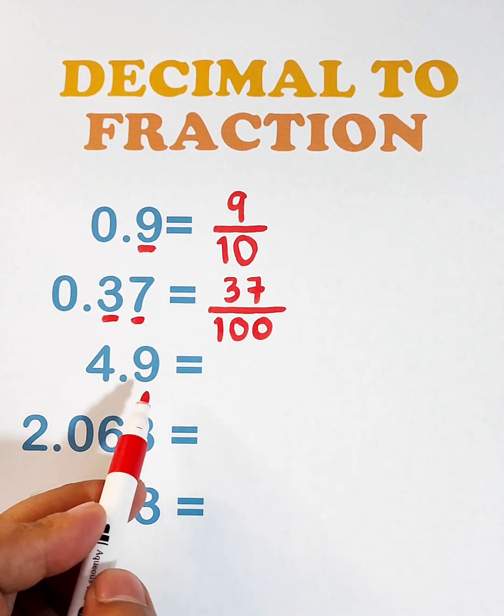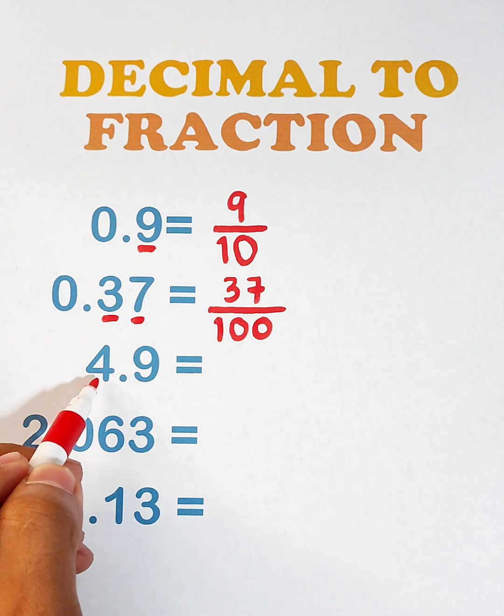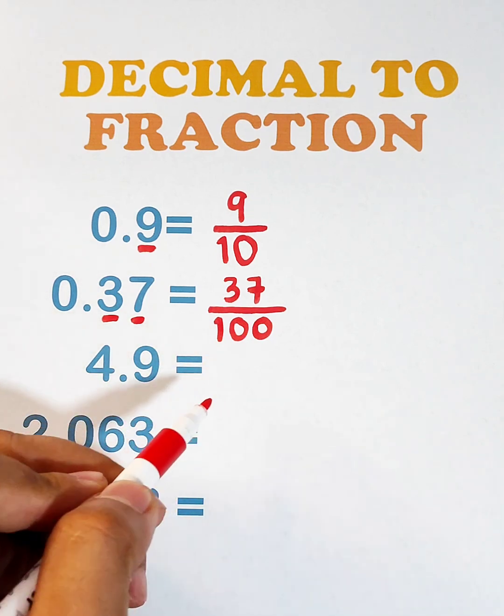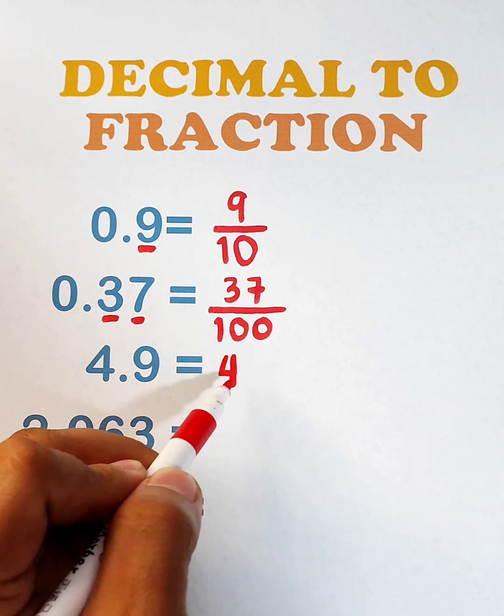Next, we have 4.9. As you can see, we have here a whole number. That is 4. So definitely, we will create a mixed number here. So we will put that as 4, as a whole number.